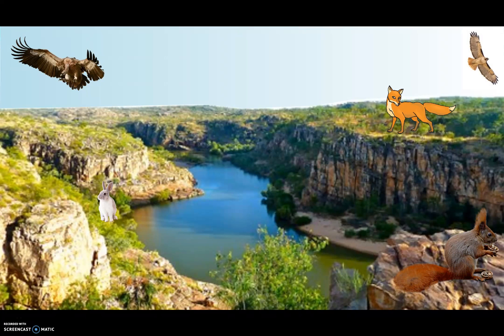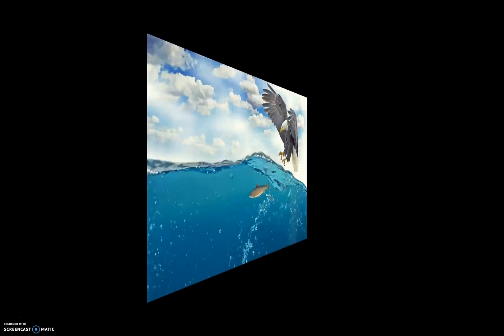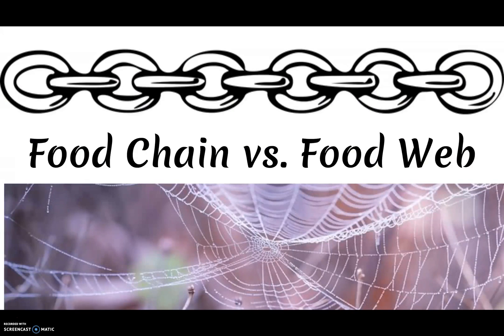The non-living surroundings would be like the gravel, the water, and air. Now the animals or organisms inside of that ecosystem interact with each other, normally by eating each other.